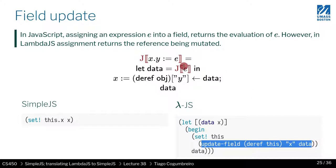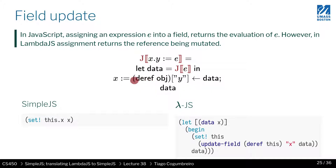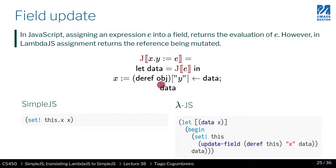What we're updating is the result of the evaluation of expression e, which is done in translation. Then we do a set to a certain reference — x is a reference — so by doing x.something we are updating that reference. In that reference we had an object, so we store the updated object. Finally, in JavaScript, when you do an assignment it returns the value assigned, so we have to return that data.